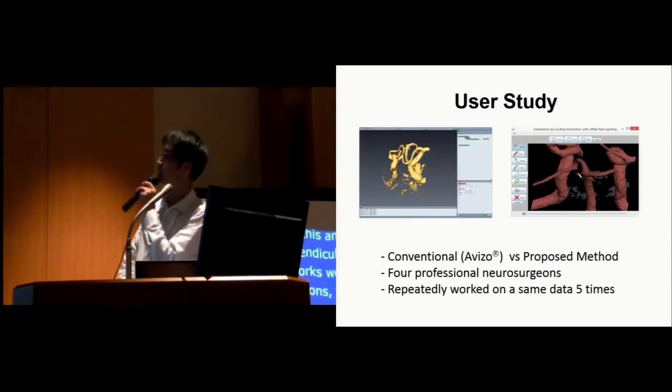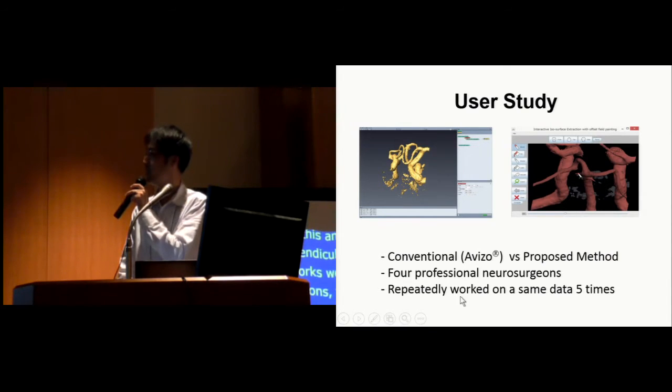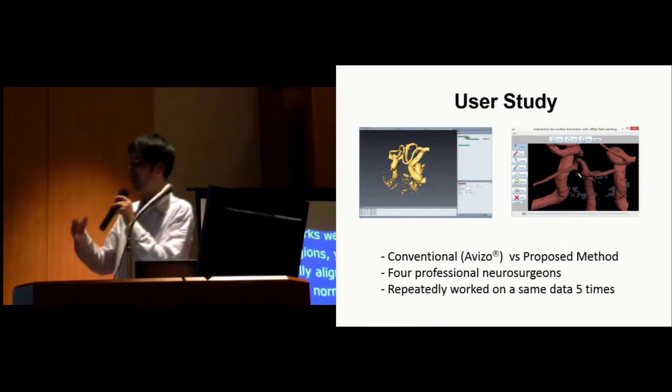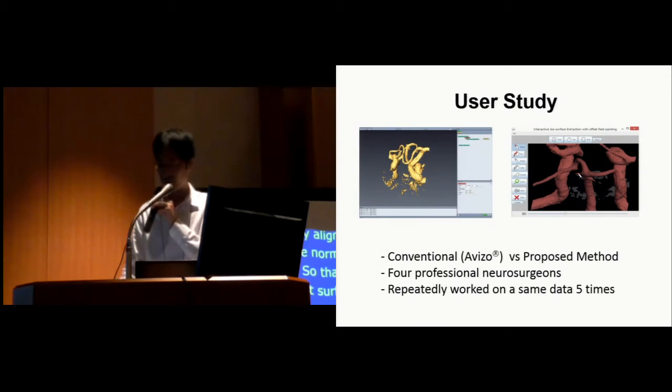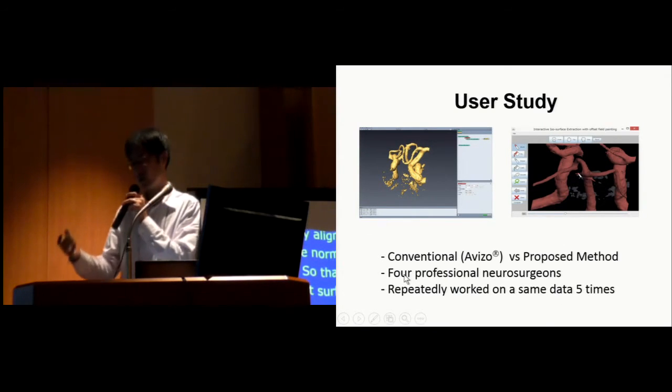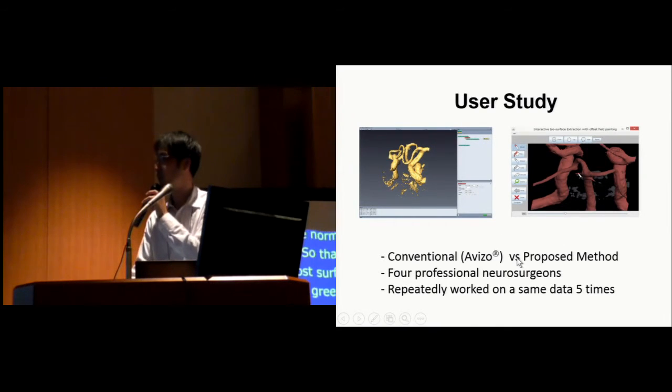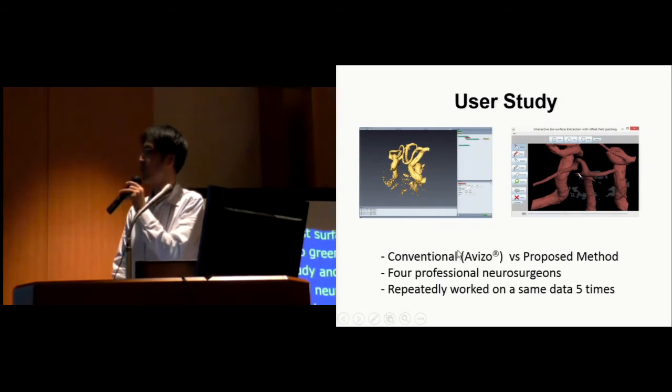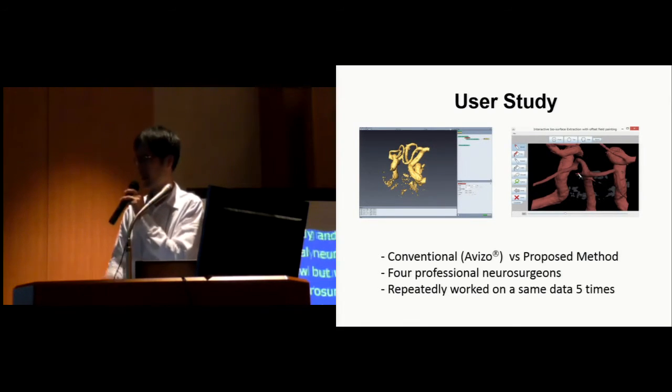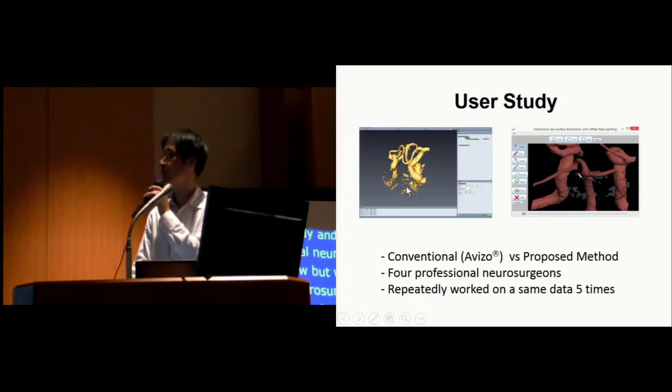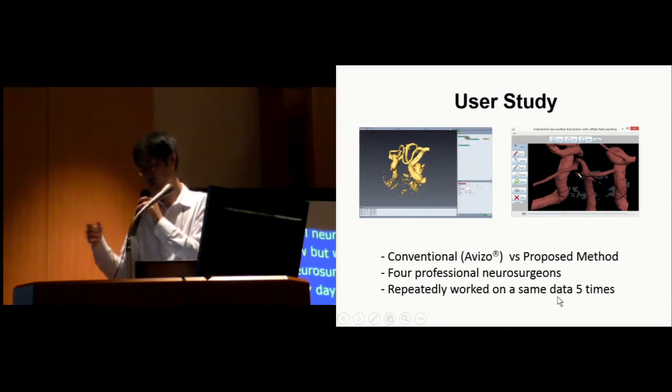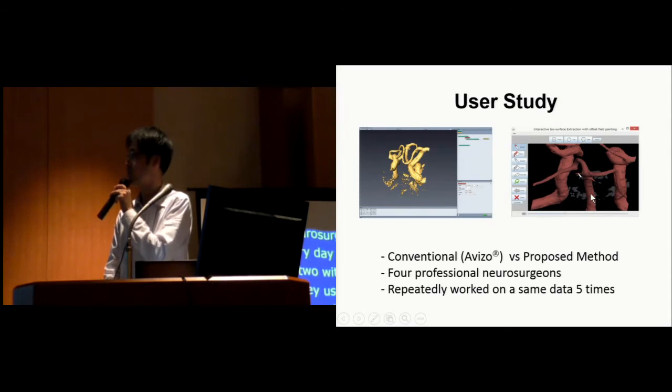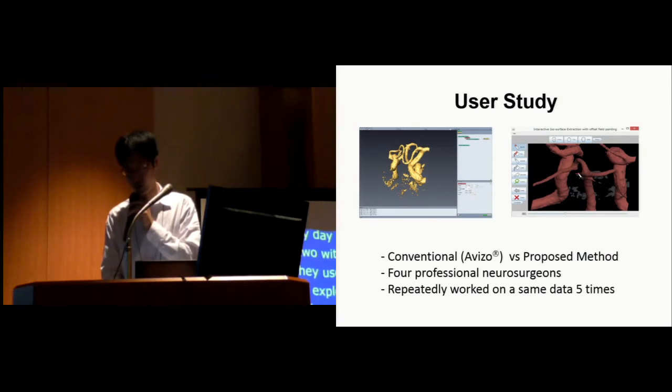We ran a simple user study, and we recruited four professional neurosurgeons. Four maybe sounds very few, but we recruited professional neurosurgeons taking care of patients every day. So it's very expensive, and I think four is good enough to get initial feedback. We compared our tool with a traditional method, what they use every day. And in order to remove exploration time, which can be very random, we asked them to repeat the same operation five times. We asked them to identify specific structure, and then asked them to get it using this interface and this interface.